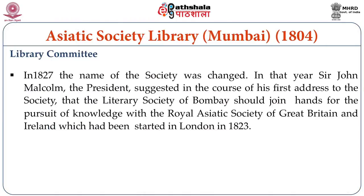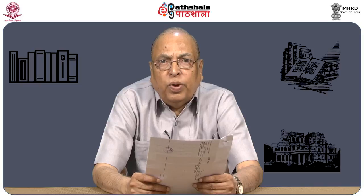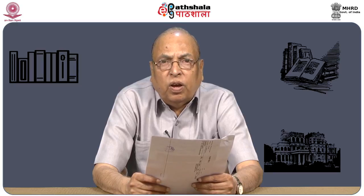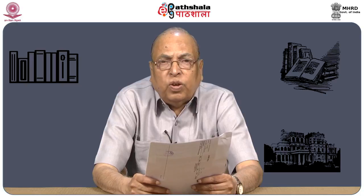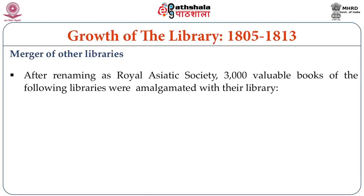In 1830, the management decided to approach the government for accommodation for the Society and the Library. At that time, the town hall was under construction, and they approached the government to allot space in the town hall. The Society contributed about 10,000 rupees for the construction, and two rooms were spared for the Society and its library. The library and the Society moved into the new building on 26th November 1830.